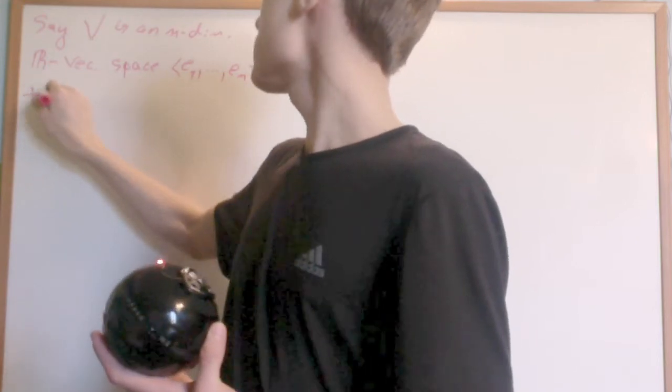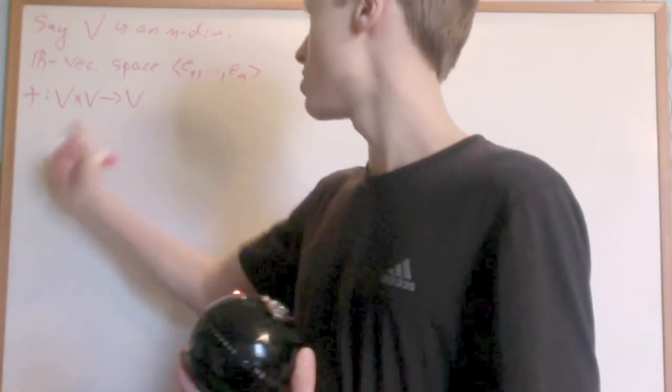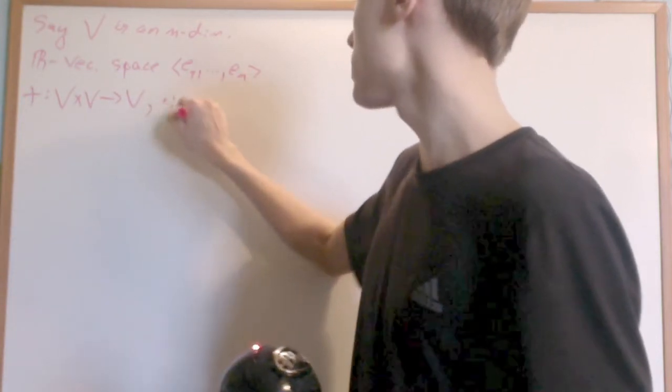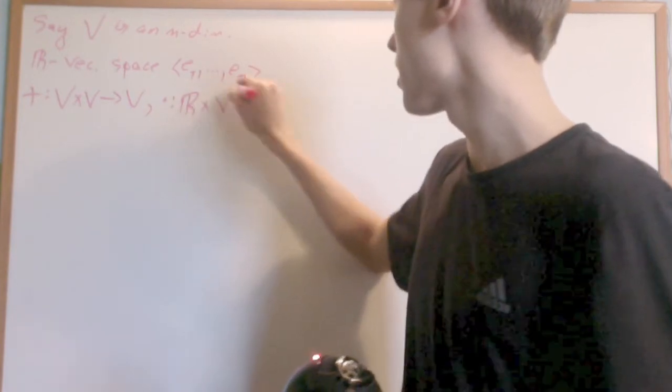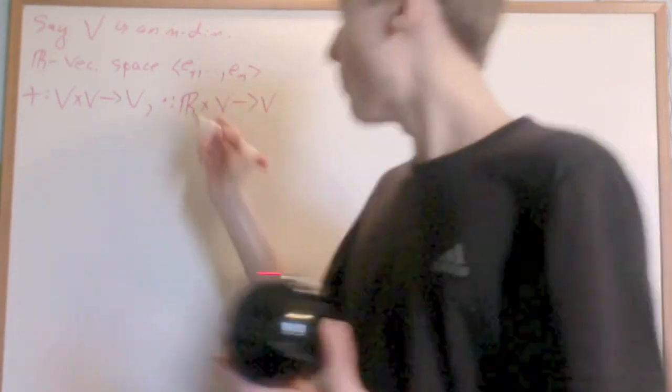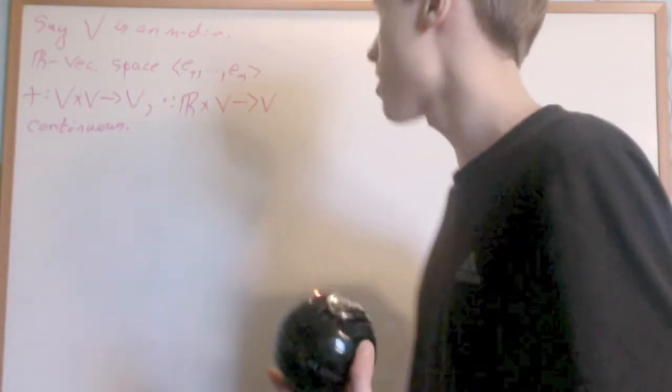Now let's equip it with the topology such that the map plus from V cross V into V—it takes in two vectors and outputs a vector—and the scalar multiplication that takes in a real number and a vector and outputs a vector, both of these have to be continuous. They don't have to be homeomorphisms, just continuous.